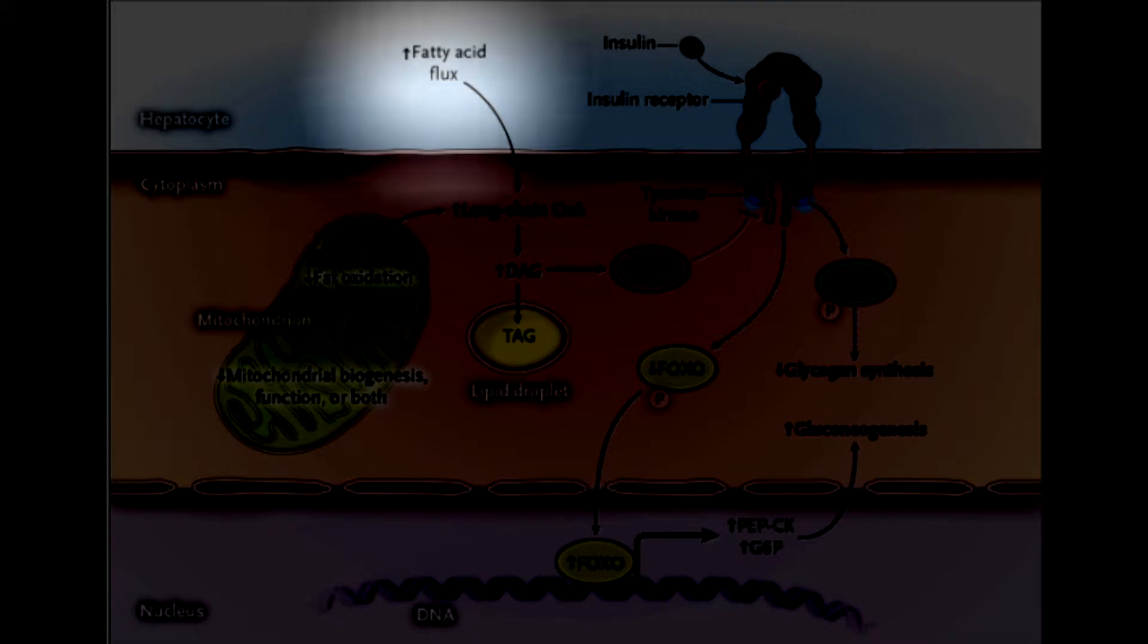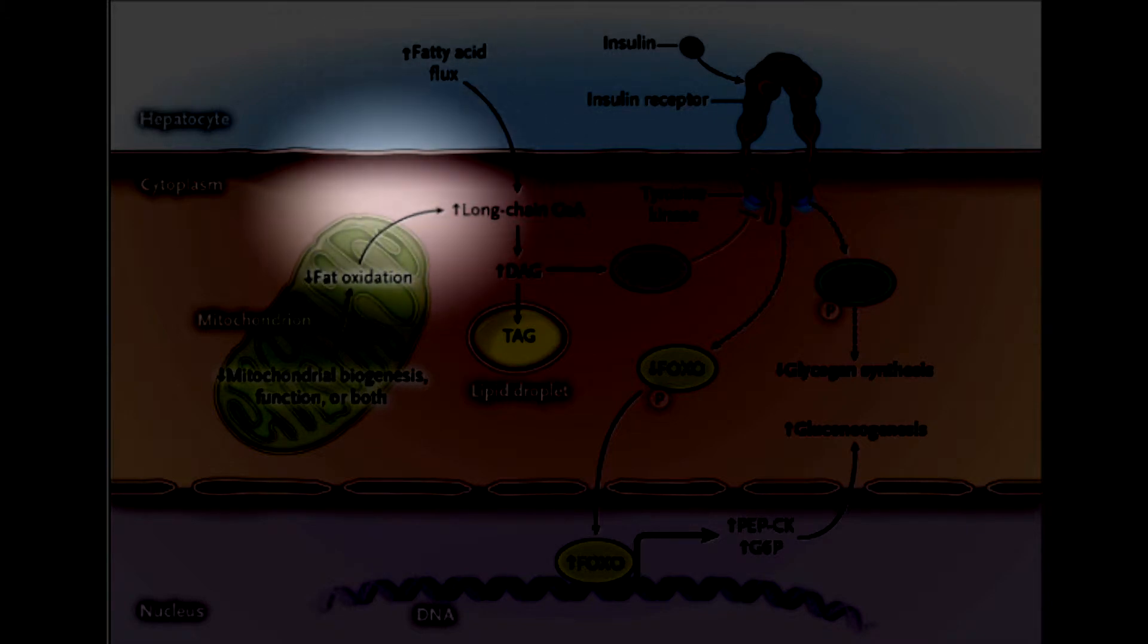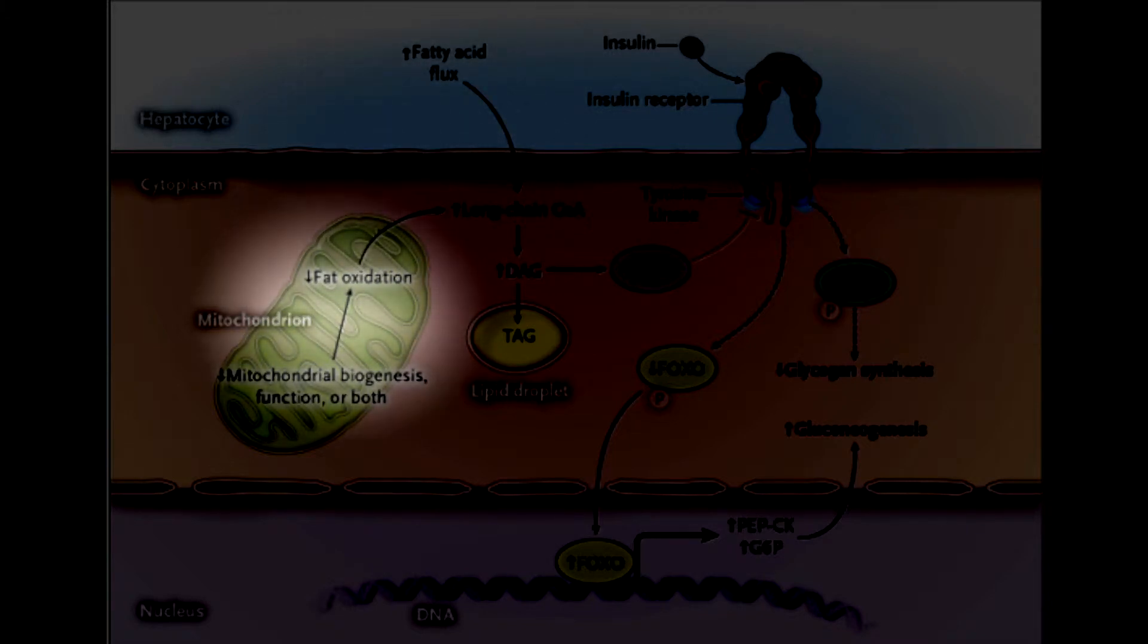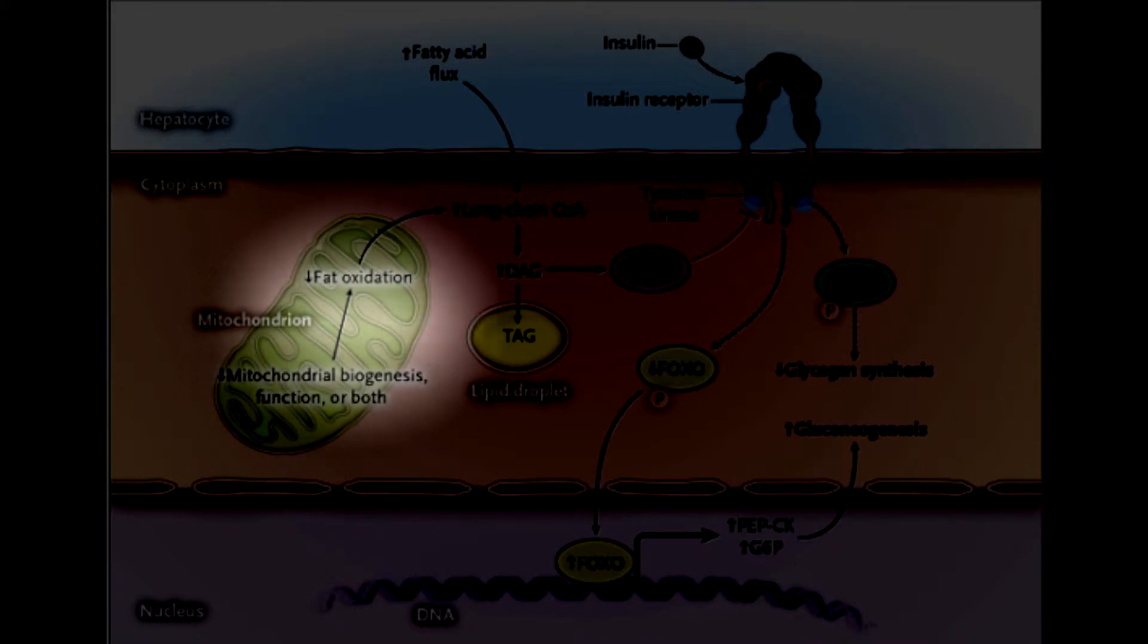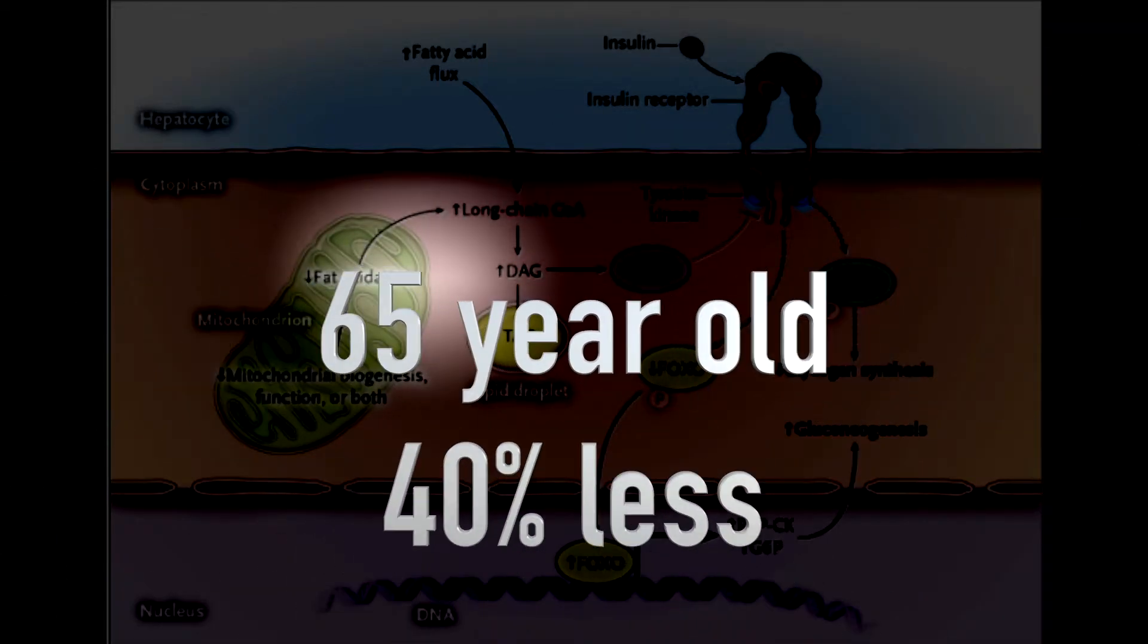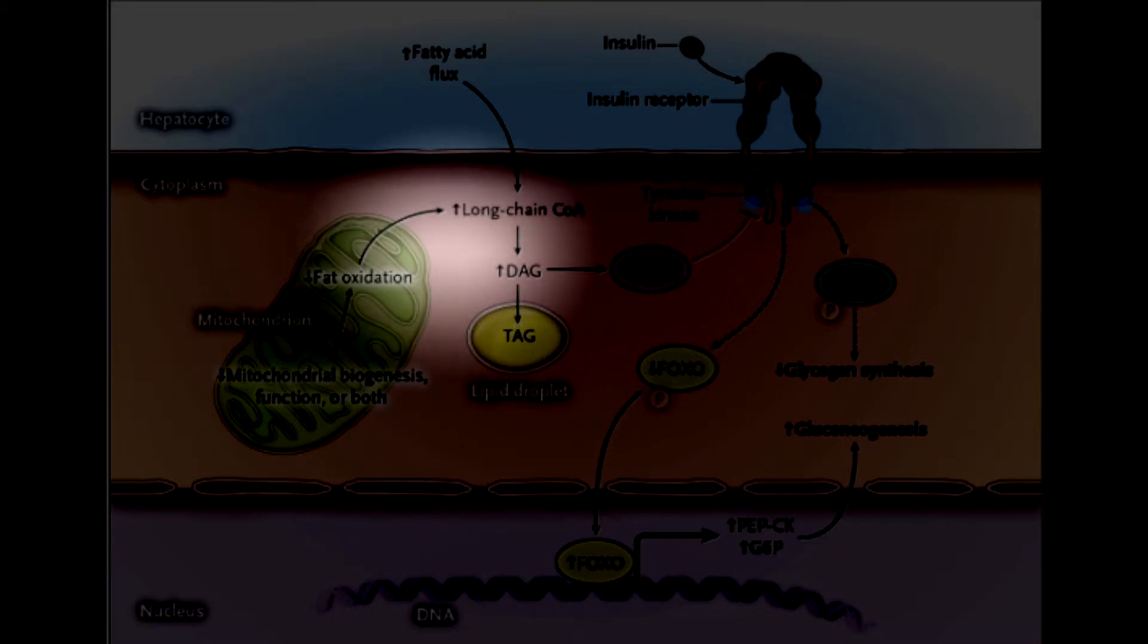Liver insulin resistance occurs because of increased free fatty acid flux into the cells. This overwhelms the mitochondrial capacity to handle the free fatty acids. This is partially genetic as well as age-related. A 65-year-old will have 40% less capacity than a 40-year-old.